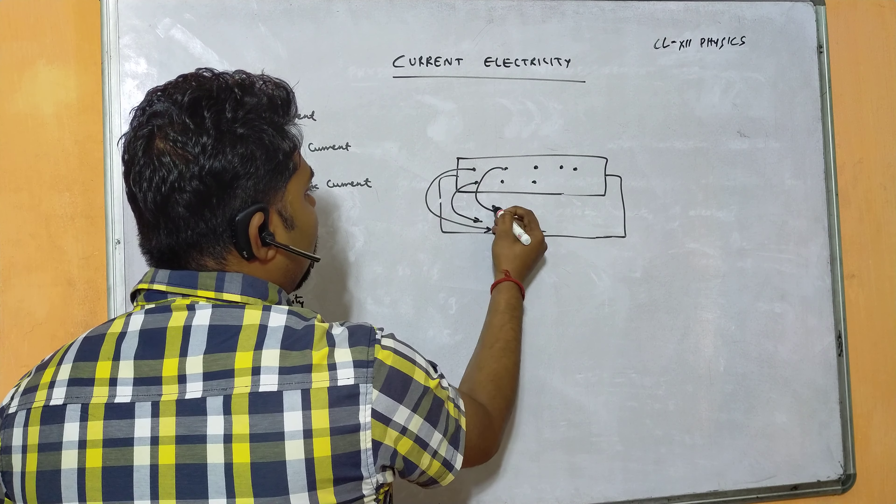There are two main types of electric current: direct current (DC) and alternating current (AC). Direct current is one where the magnitude and direction remain the same — it is a steady current. Alternating current changes its magnitude and direction periodically.